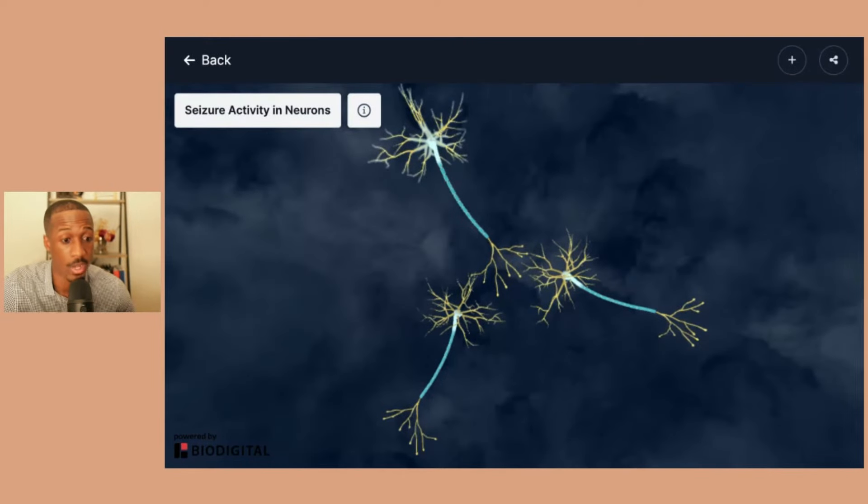So with part nine, we are going to briefly talk about seizure activity. Now with everything that we've talked about, dopamine release, glutamate, serotonin, all of these different things that happen in the brain happen at the neuron level. You can imagine what might be potentially happening with seizures.